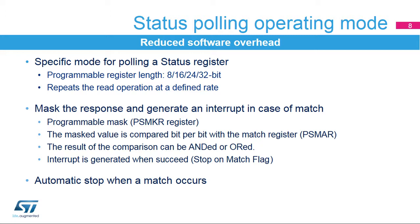The Quad SPI interface can also be configured to periodically read a register in the external flash memory. The return data can be masked to select the bits to be evaluated. The selected bits are compared with their required values stored in the match register. The result of the comparison can be treated in two ways: in ANDED mode, if all the selected bits are matching, an interrupt is generated; in ORD mode, if one of the selected bits is matching, an interrupt is generated. When a match occurs, the Quad SPI interface can stop automatically.